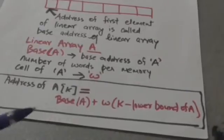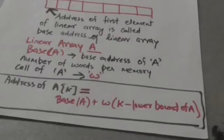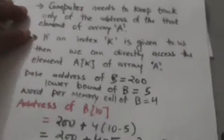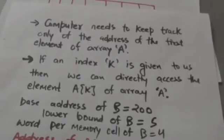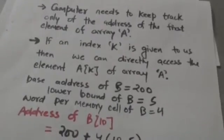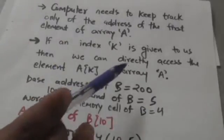Therefore, the computer doesn't need to keep track of the address of every element of linear array A. The computer only needs to keep track of the address of the first element. If an index k is given, we can directly access element A[k].